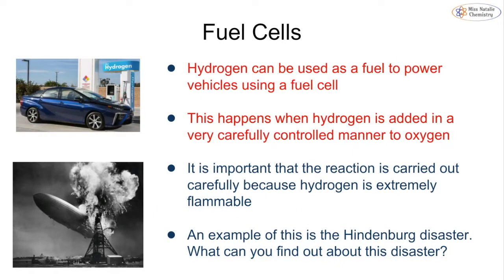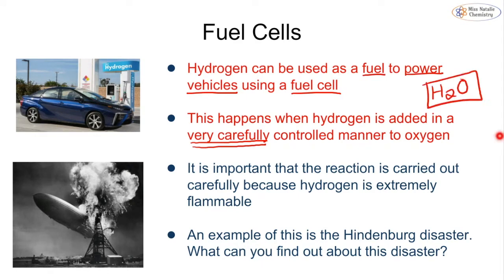A fuel cell is a setup that allows us to use hydrogen as a fuel to power cars or vehicles. We burn the hydrogen very carefully by adding oxygen, and we make H₂O — water. It's very important this is done carefully because hydrogen is extremely flammable, which means it can catch fire easily.